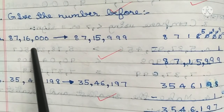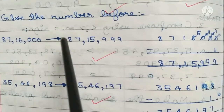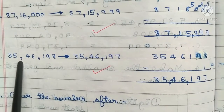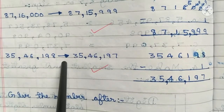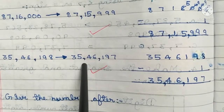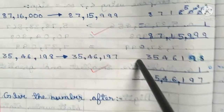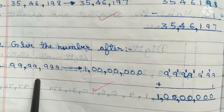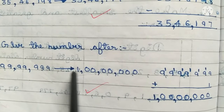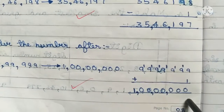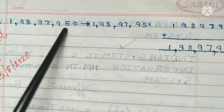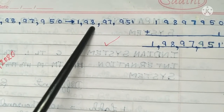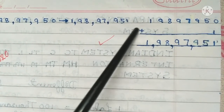Give the number before 7 lakh 16,000. The number before is 7,15,999. Before 35,46,198 is 35,46,197. Give the number after 99,99,999. After number is 1 crore. After 1 crore 98,97,950, adding 1 gives 1 crore 98,97,951.